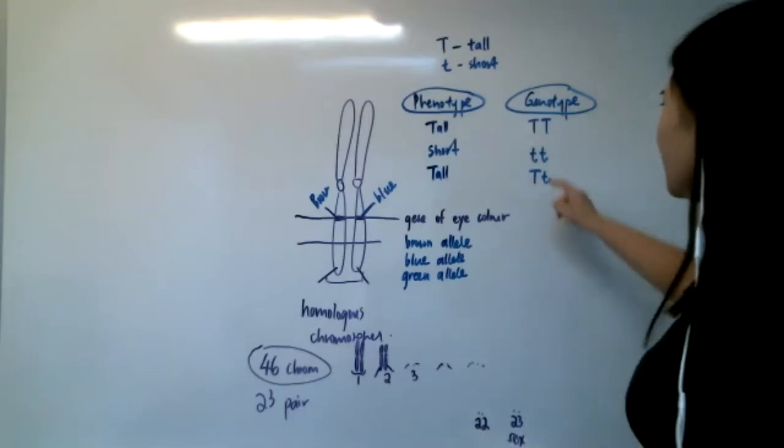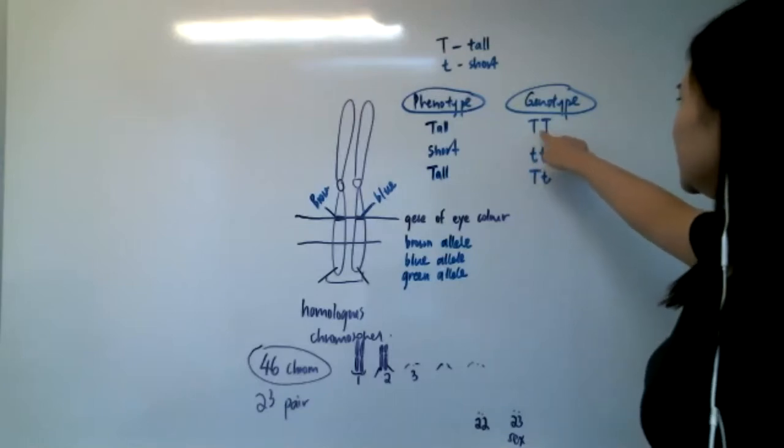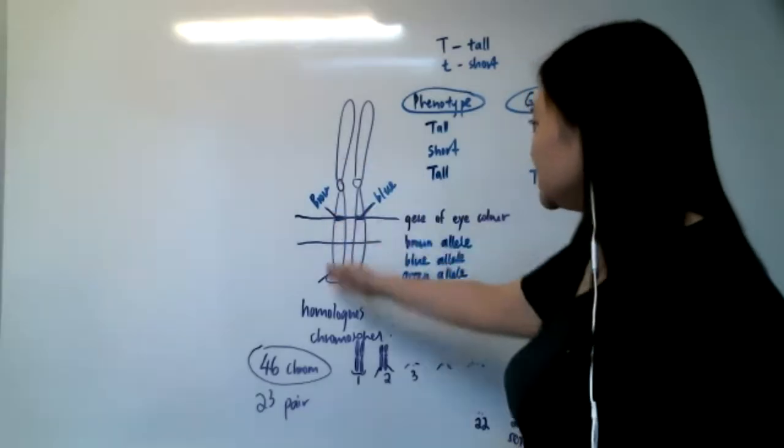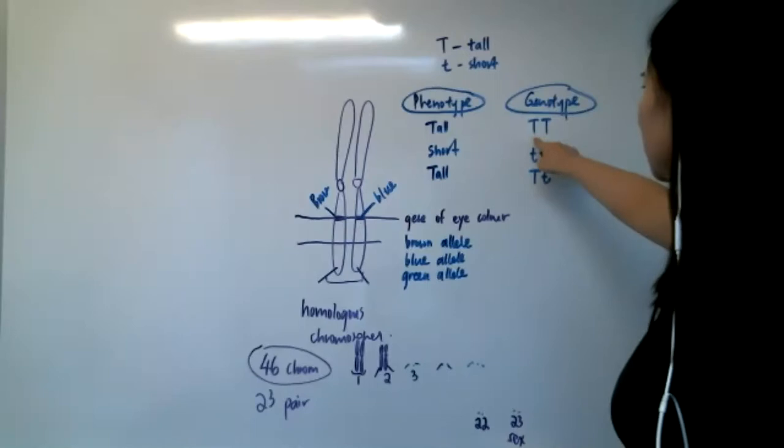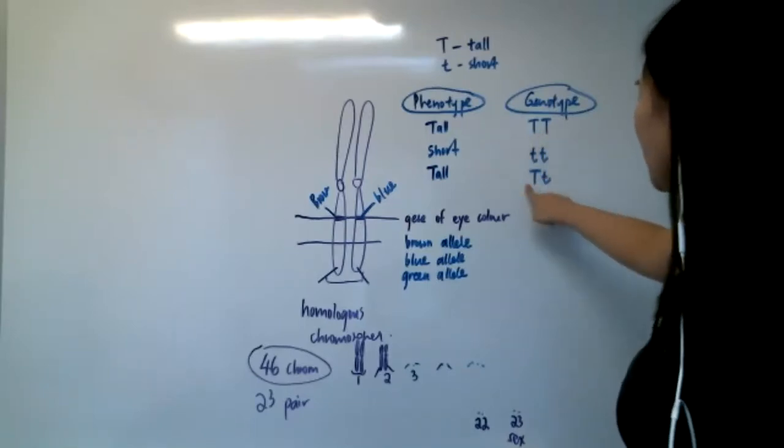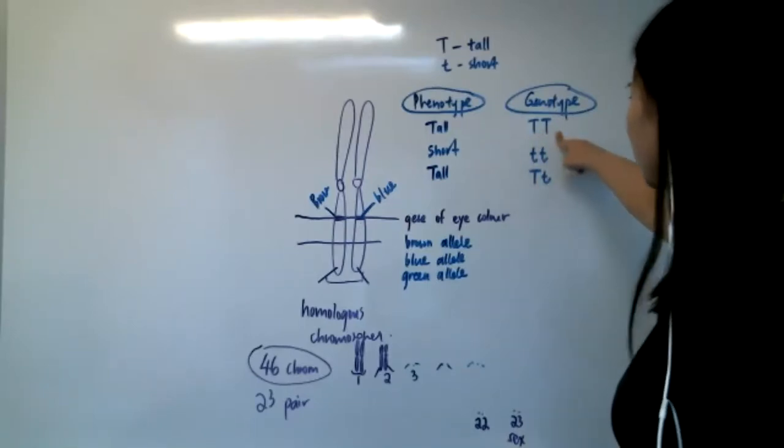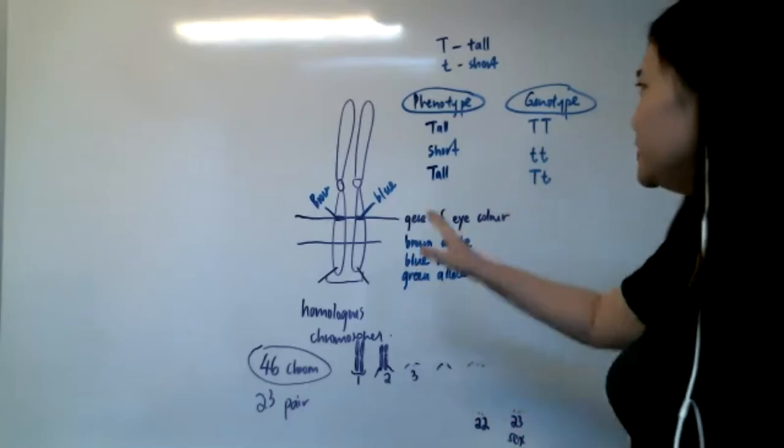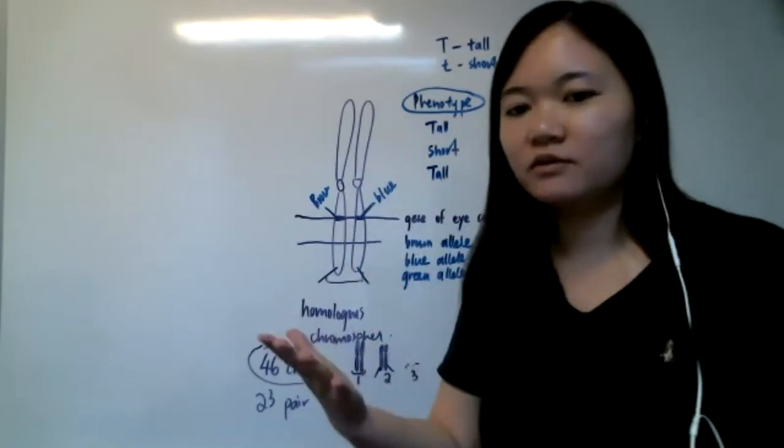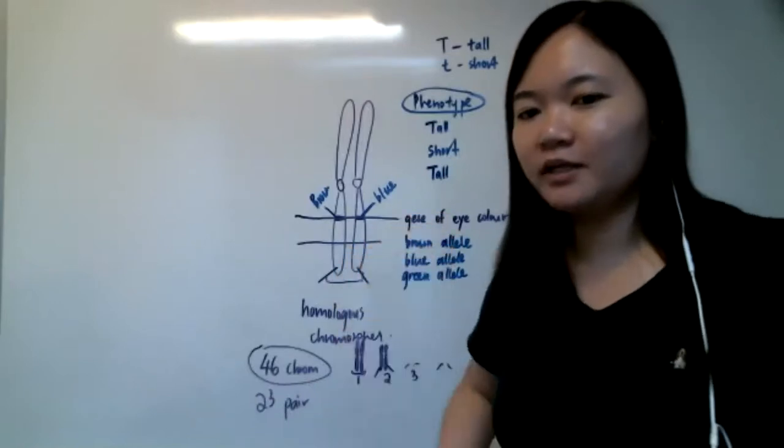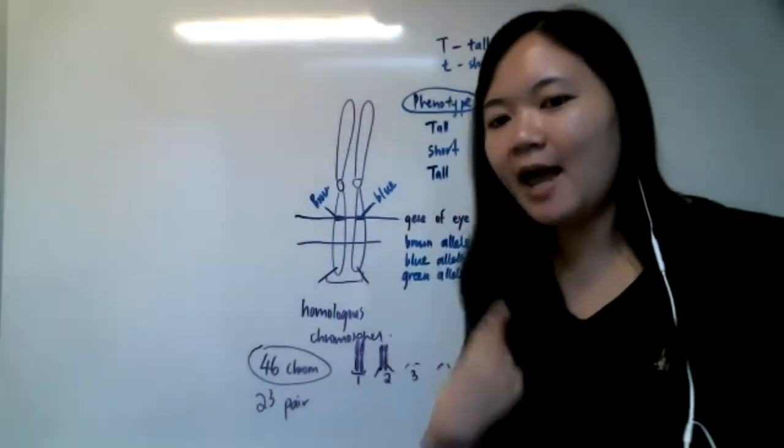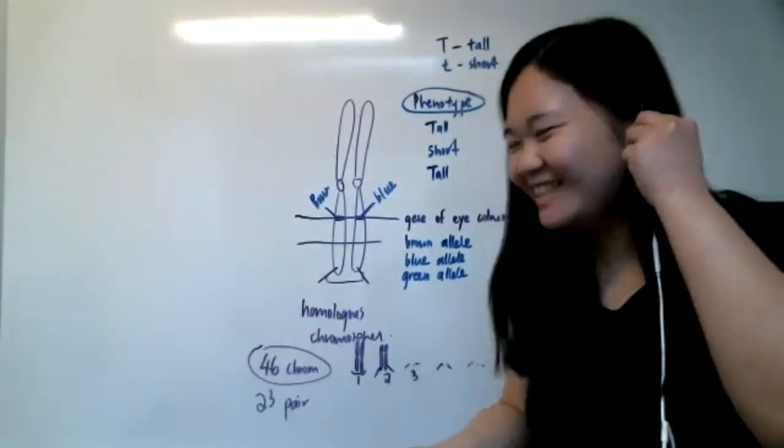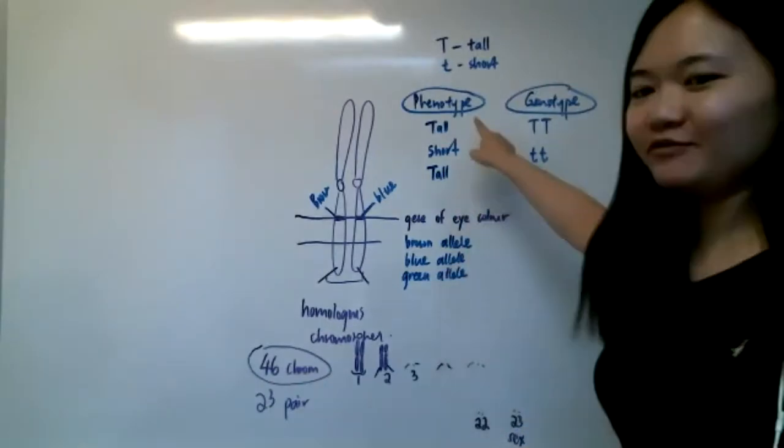So, I repeat: genotype refers to the genetic makeup. Genetic makeup is the alleles that you have - the alleles you get from your father and from your mother. One from your dad, one from your mom. So genotype normally comes in pairs. And then phenotype is the ultimate expression by your body. For example, my ultimate expression is black hair, brown eyes, short figure. That is my phenotype.